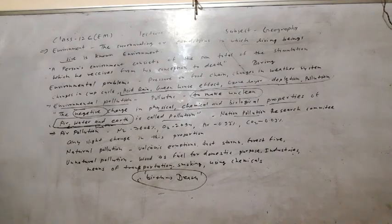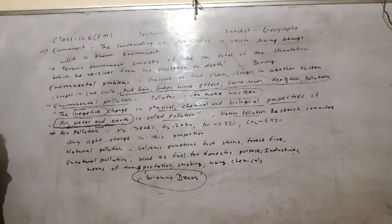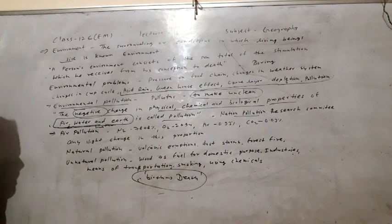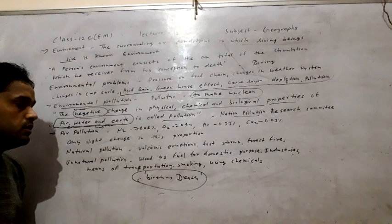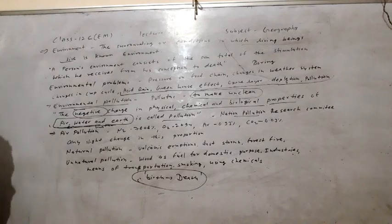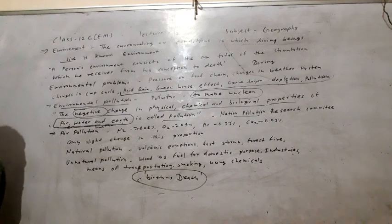We can classify air pollution into two parts: natural and unnatural. Natural pollution — where the human has no role — includes volcanic eruptions, storms, and forest fires. Unnatural pollution, where wood is used as fuel for domestic purposes and industries, is where humans have the main role in causing pollution.